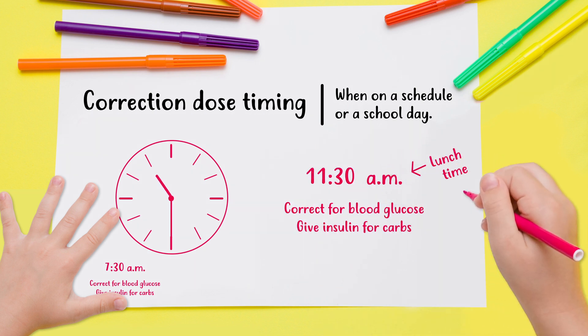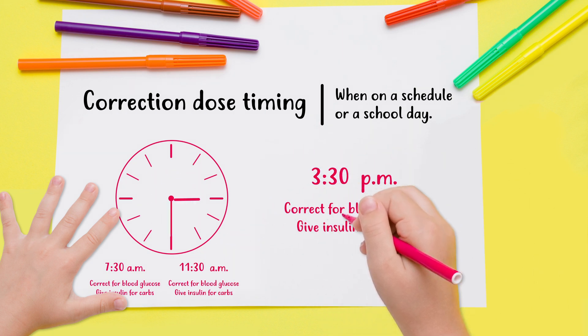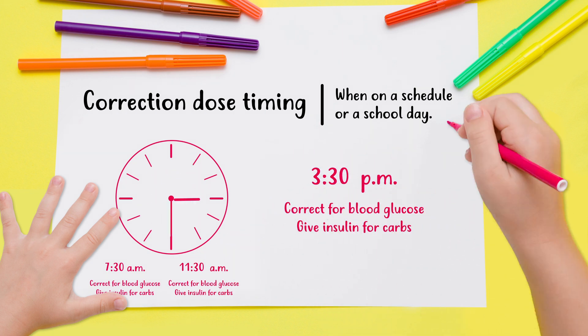You're ready for lunch. Check your glucose — it's been more than three hours since your last dose of fast-acting insulin. So if your glucose is high, take your correction dose and dose for your carbs as well.